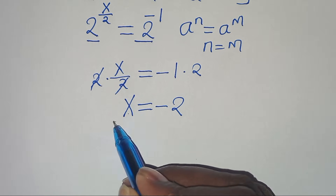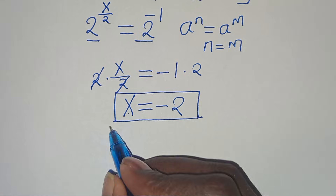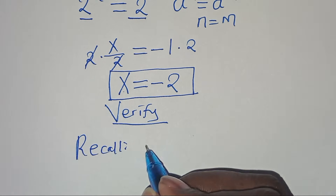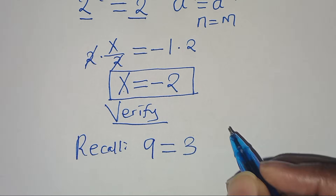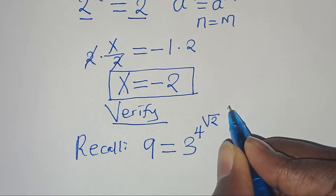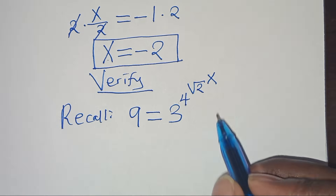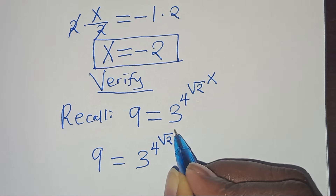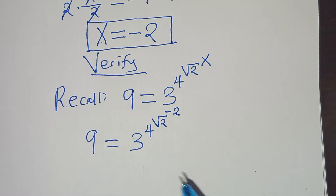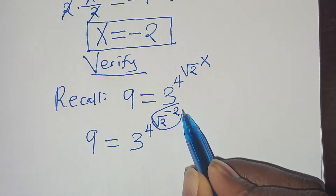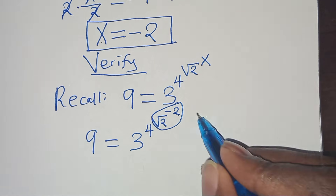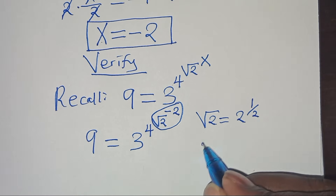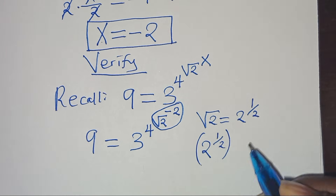We have x = minus 2. Let's verify that this value satisfies the equation. Recall: 9 = 3 to the power of 4 to the power of square root of 2 to the power of x. We look at the part: square root of 2 raised to the power of minus 2. Since square root of 2 equals 2 to the power of one half, we have 2^(1/2) raised to the power of minus 2.